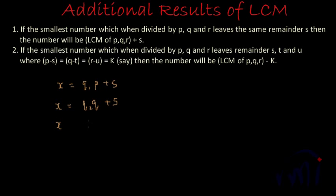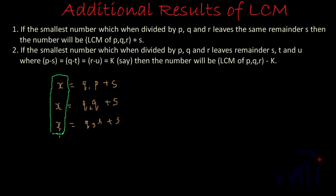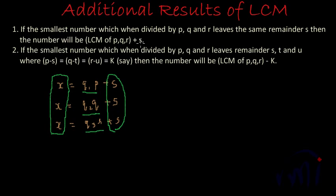And when we divide X by R, we get quotient Q3 and remainder S, so X can be written as Q3 times R plus S. We want to find the value of X. X will be some multiple of P, Q and R — a multiple of all of them — and then we have to add S to that multiple to get S as the remainder every time.